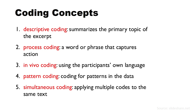Descriptive coding summarizes the primary topic of the excerpt. So if you have a statement to analyze, you are going to summarize and define that particular excerpt. Process coding is the coding wherein a word or phrase captures the action found in the statement. In vivo coding uses the participant's own language — the words you take as code come from the participant's statement. Pattern coding is coding for patterns in the data. And simultaneous coding means applying multiple codes to the same text — you put many codes on the same passage.